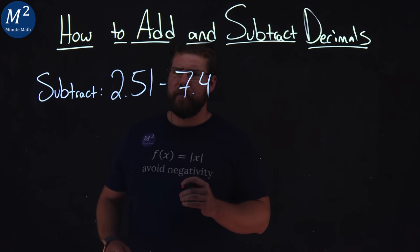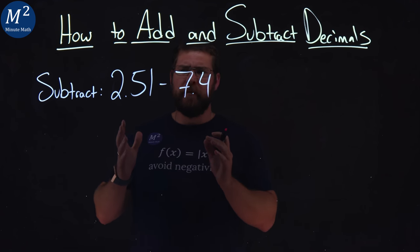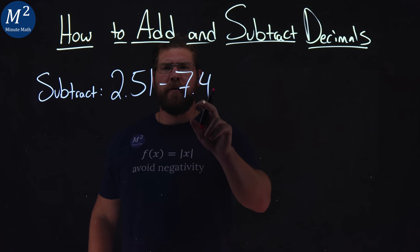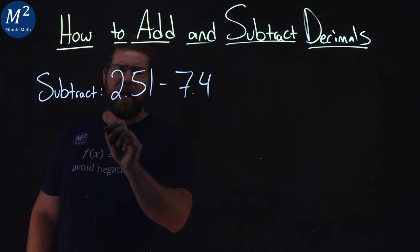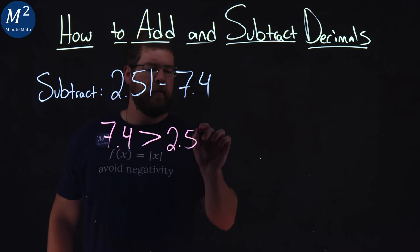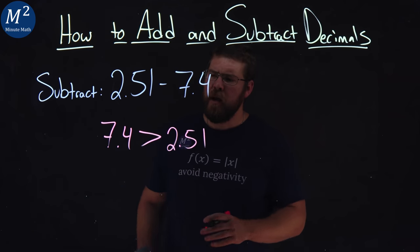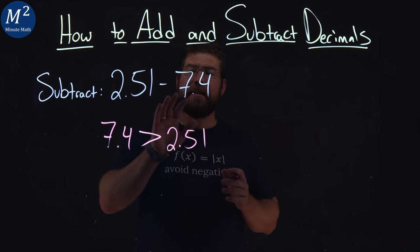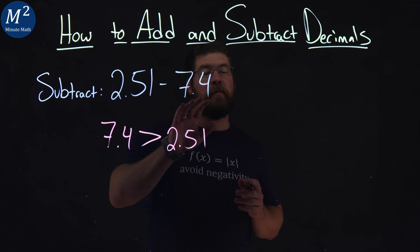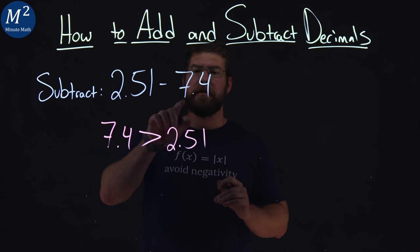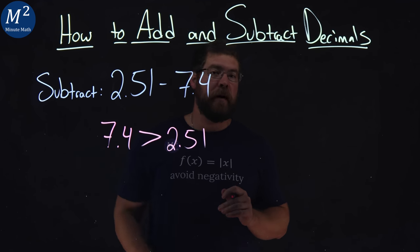What's different about this problem? What do we notice about these two numbers? 7.4 is greater than 2.51. And what that tells us is when we subtract these two numbers, 2.51 minus 7.4, we're actually going to have a negative number, right? Because 7.4 is more than 2.51.